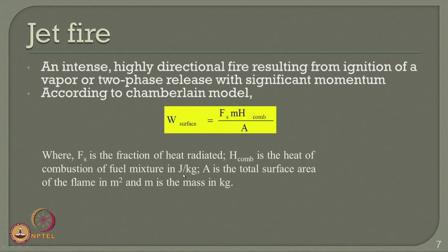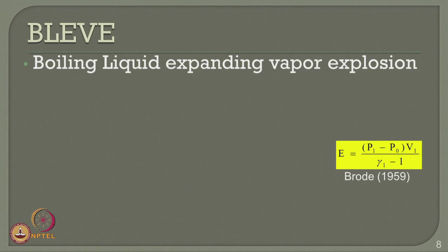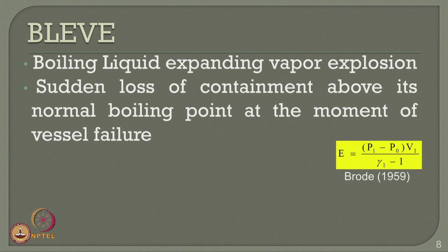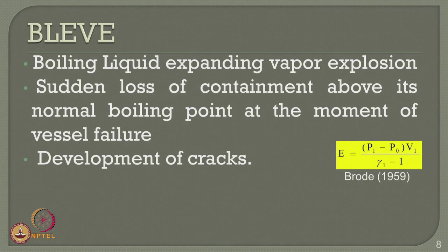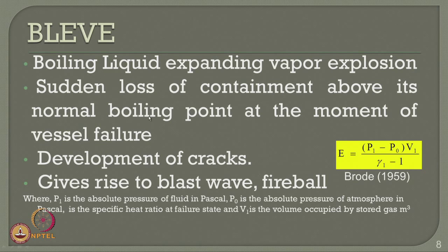The third consequence is BLEVE — Boiling Liquid Expanding Vapor Explosion. The equation given by Brough 1959 is used. BLEVE is a sudden loss of containment above normal boiling point at the moment of vessel failure, resulting in development of cracks and a blast wave in a fireball. In this equation, P1 and P-naught are the absolute pressures of fluid and atmosphere in Pascals; V1 is the volume occupied by the stored gas in cubic meters; and nu is the specific heat ratio at the failure state.